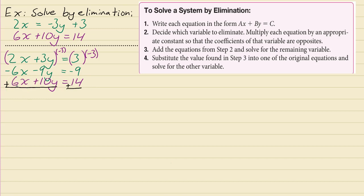When you add the left sides you get 0x, which was the whole point of all that. Negative 9y plus 10y works out to just be plus y, and that should be equal to negative 9 plus 14, which is 5. So that gives you just y equals 5.